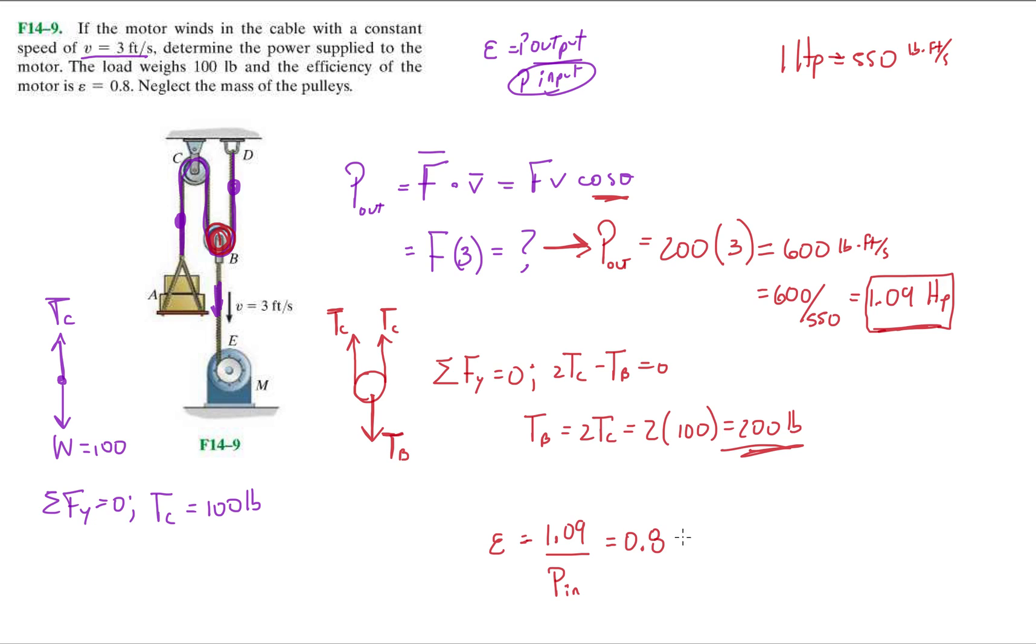Which means, let's just move everything, let's isolate the input power. And then we just divide 1.09, we divide it by 0.8, and then we get 1.3625 horsepower.